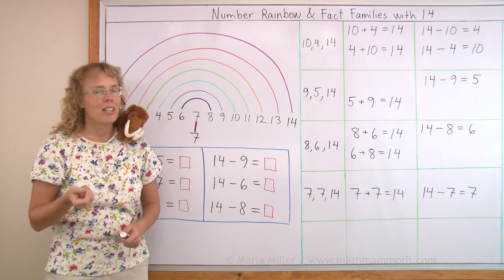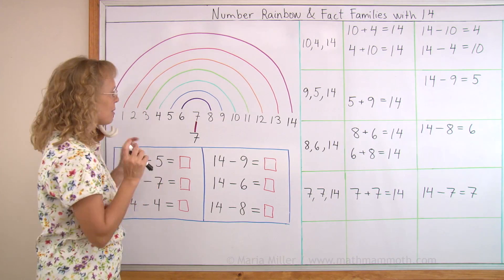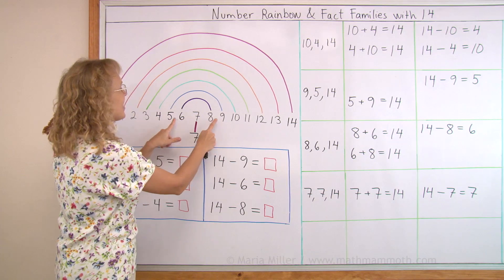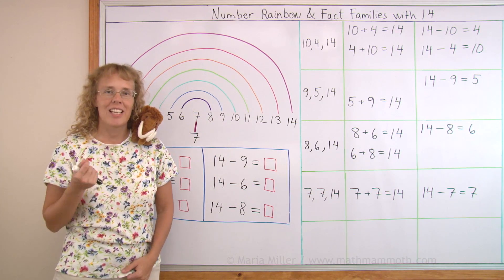In this lesson we are going to especially concentrate on these single digit sums, meaning 5 and 9, then 6 and 8, and 7 and 7. Those three pairs that add up to 14.